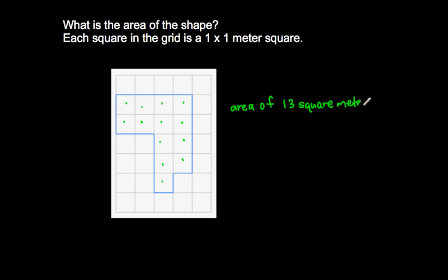This sticks with our understanding of what area is. Area is just the number of square units that can completely tile a shape or cover a shape without overlapping or without any gaps. There are thirteen square units that can actually cover the shape, so therefore the area of this shape is thirteen square meters.